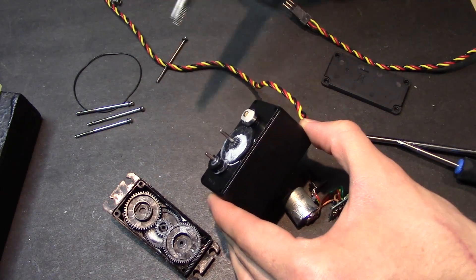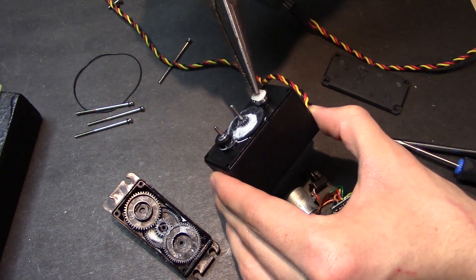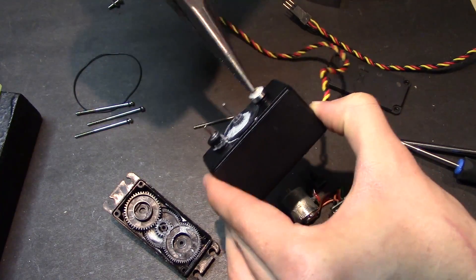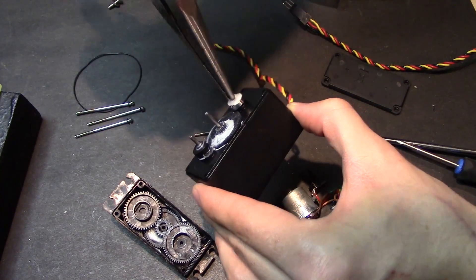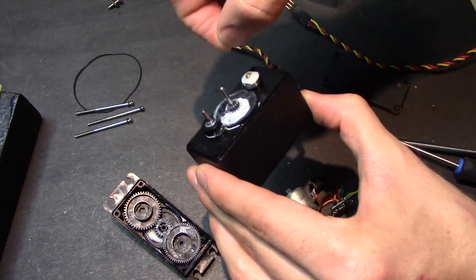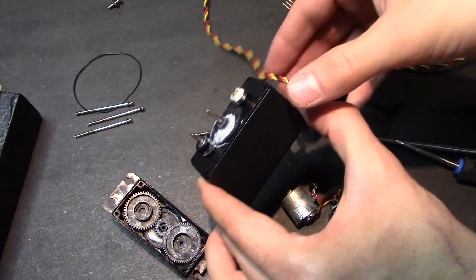And I could actually get some pliers and turn this. And I could feel there's a limit. It's got about, I don't know, 160 degrees of movement. And I'm just going to set it back to the center so that I could assemble the servo back together.